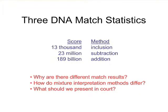Interestingly, there are three different match statistics here. The inclusion method that the FBI offered was 13,000. Robin Cotton's obligate allele subtraction method gave 23 million. And quantitative computer interpretation, using statistical methods, gave 189 billion. So the question before the court was: why are there different match results? How do these different mixture interpretation methods differ, and what should we present in court? That's what I will endeavor to explain in the remainder of the talk.